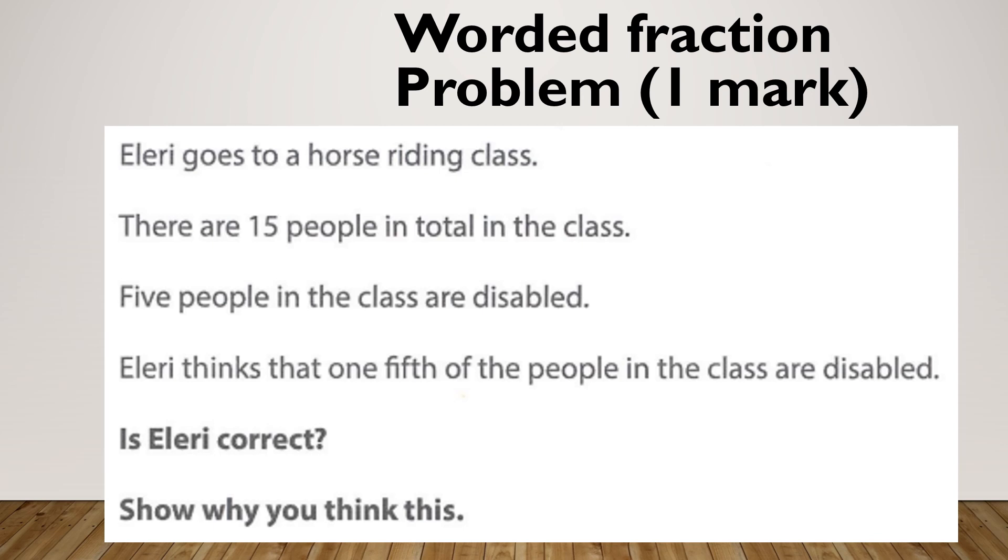So Ellery goes to a horse riding class. There are 15 people in total in the class. Five people in the class are disabled. Ellery thinks that a fifth of the people in the class are disabled. Is Ellery correct?